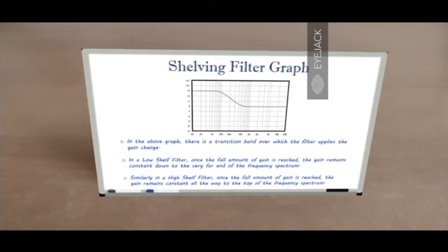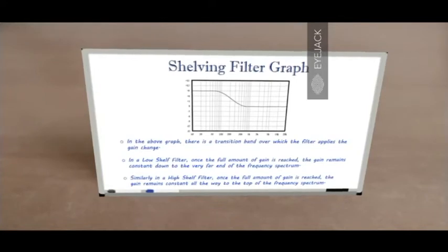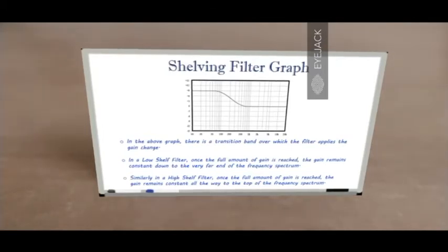In the case of a low shelf filter, once the amount of gain is reached — for example, once it has moved from 0 to 9 — the gain remains constant all the way down to the very low end of the spectrum. It doesn't change anymore. The same is true for high shelf filters: once the full amount of gain is reached, it just remains constant. Shelf filters have this philosophy — they start from 0, either they go to the top or the bottom, but they just remain the same.